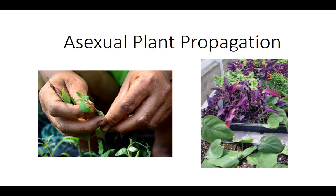Propagating plants is an inexpensive and easy way to get new plants from plants you already have. The two major methods of plant propagation are sexual and asexual propagation. Sexual propagation is the reproduction of plants via seeds. Asexual propagation is the reproduction of new plants from the stems, leaves, or roots taken from the parent plant.